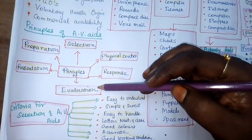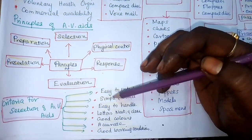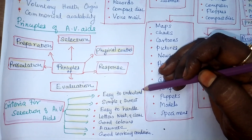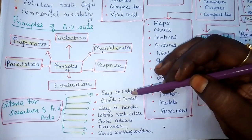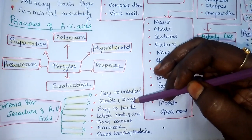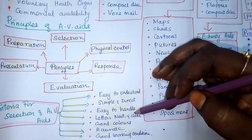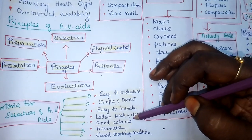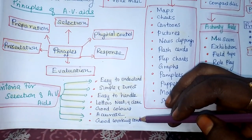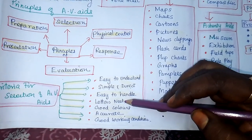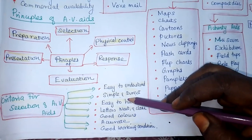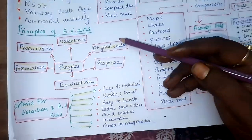There are also criteria to keep in mind. Your AV aid should be easy to understand, simple and direct, easy to handle — not requiring ten people to carry it. It must be cost-effective. The lettering should be neat and legible. Colors should be good and appropriate. It should be accurate and in good working condition. You can also consider reusability — if you prepare it well in advance, you can preserve it. Follow both principles and criteria.